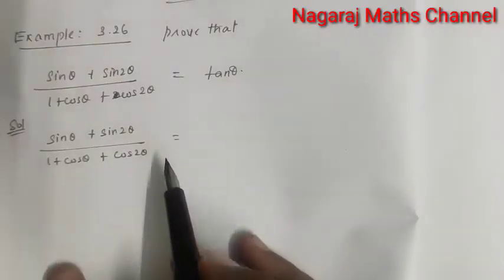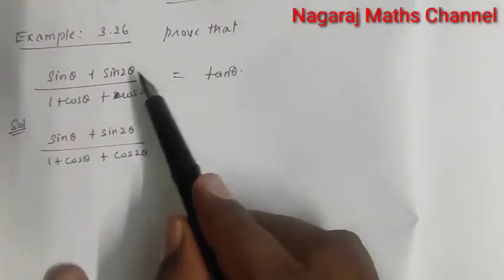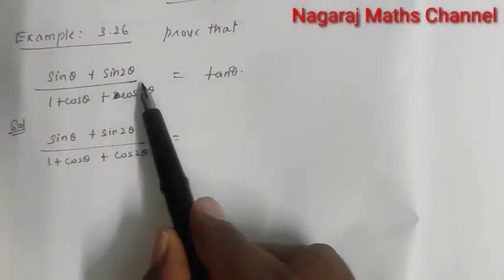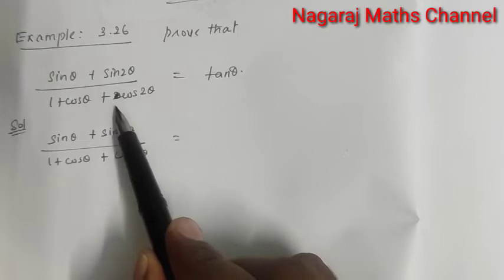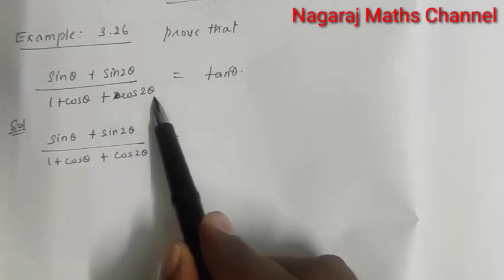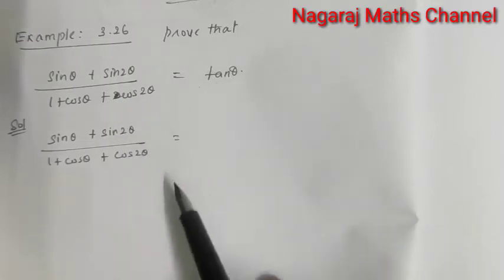Hi students, this is example 26. Prove that (sin θ + sin 2θ) divided by (1 + cos θ + cos 2θ) is equal to tan θ.